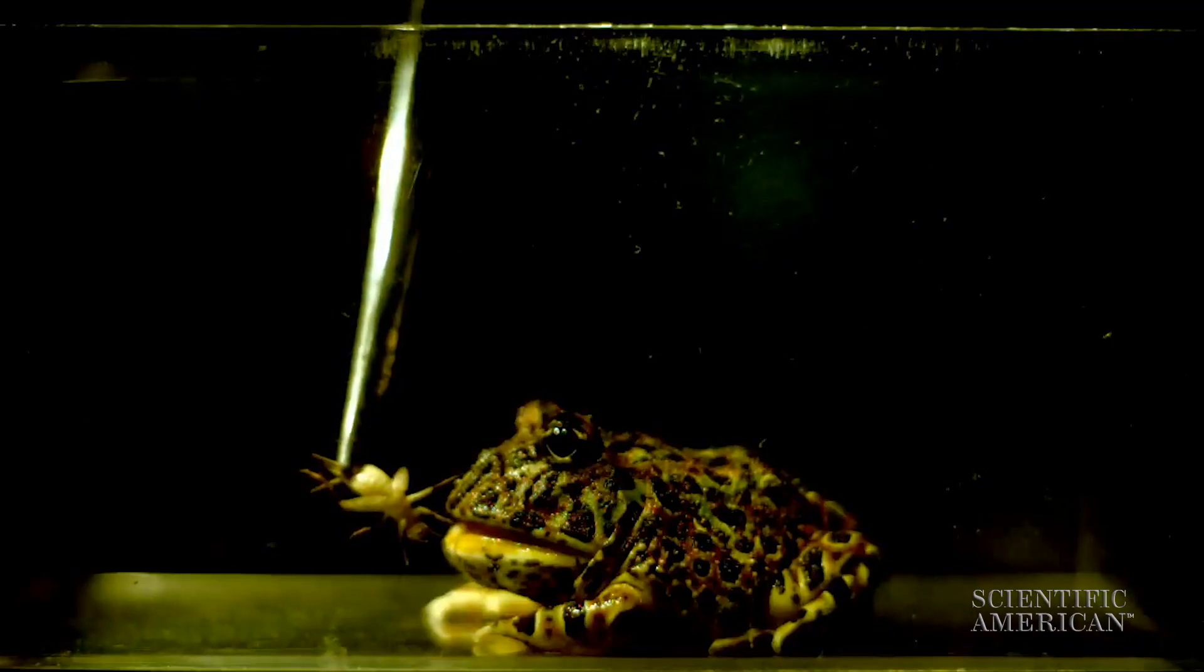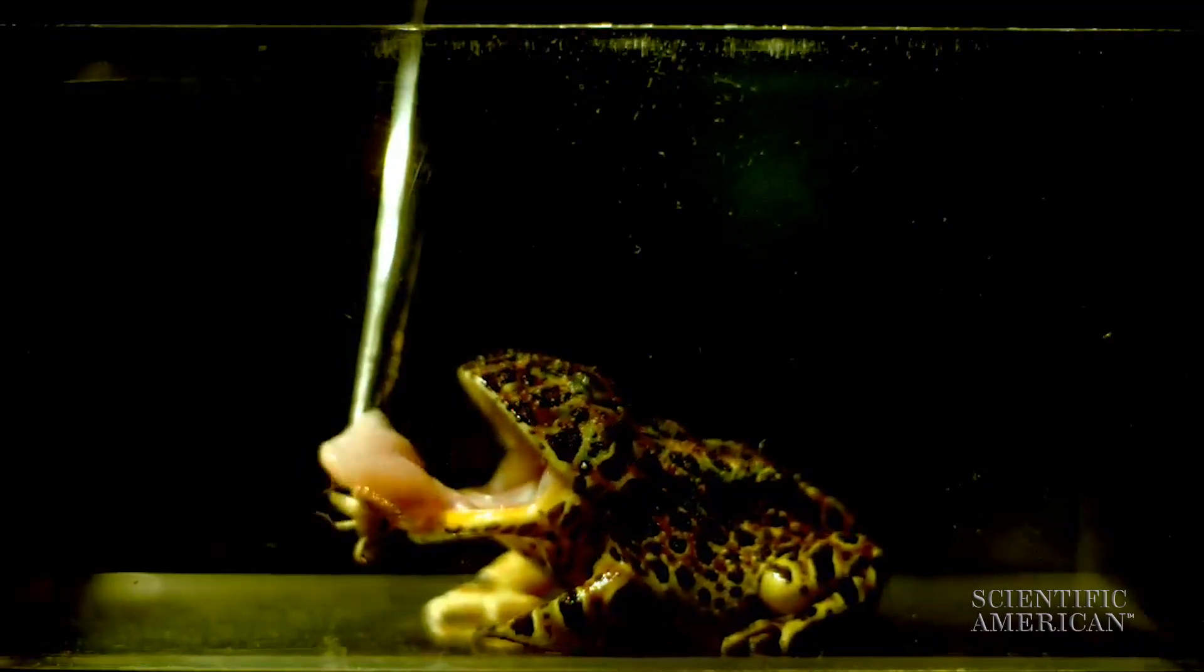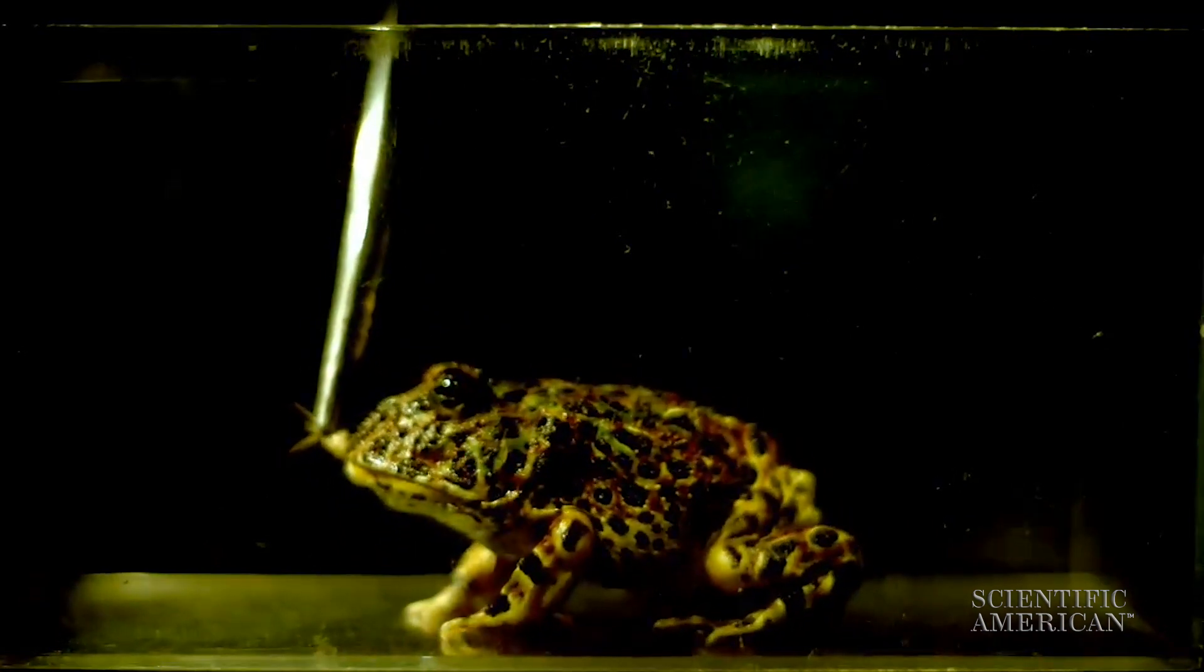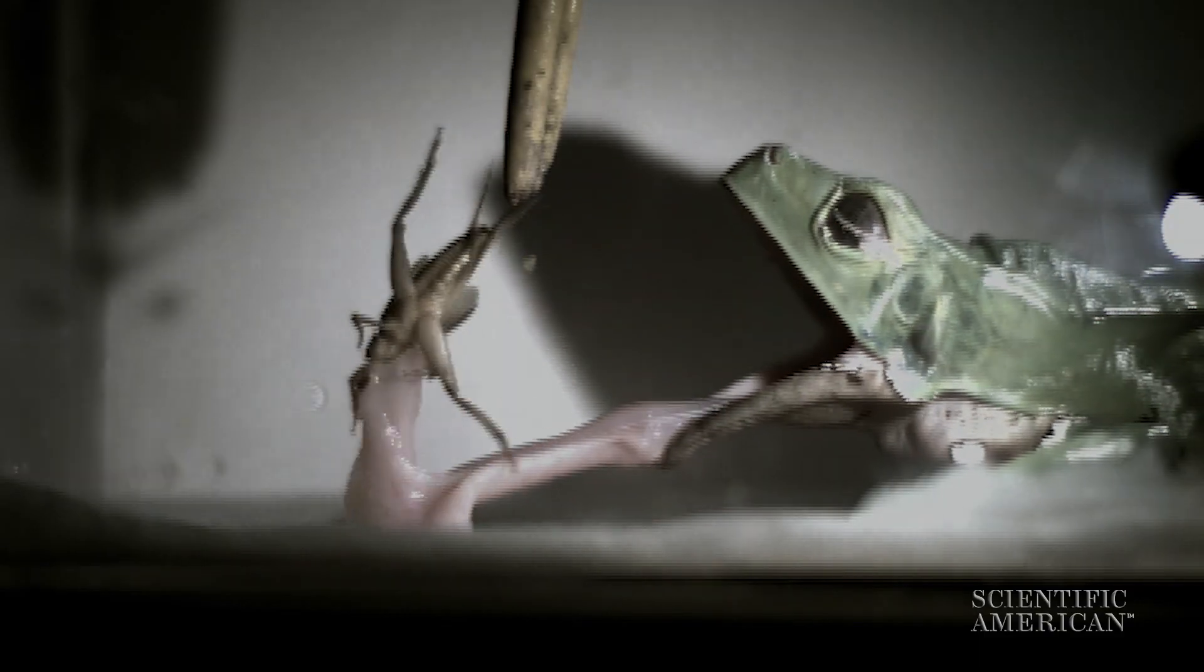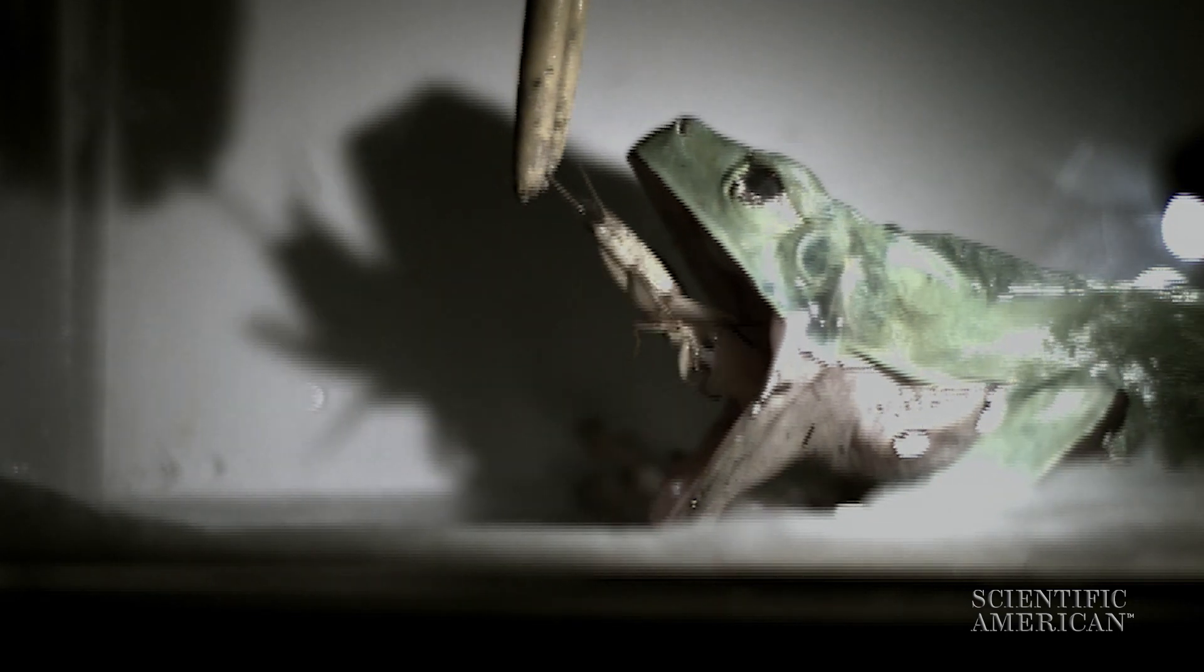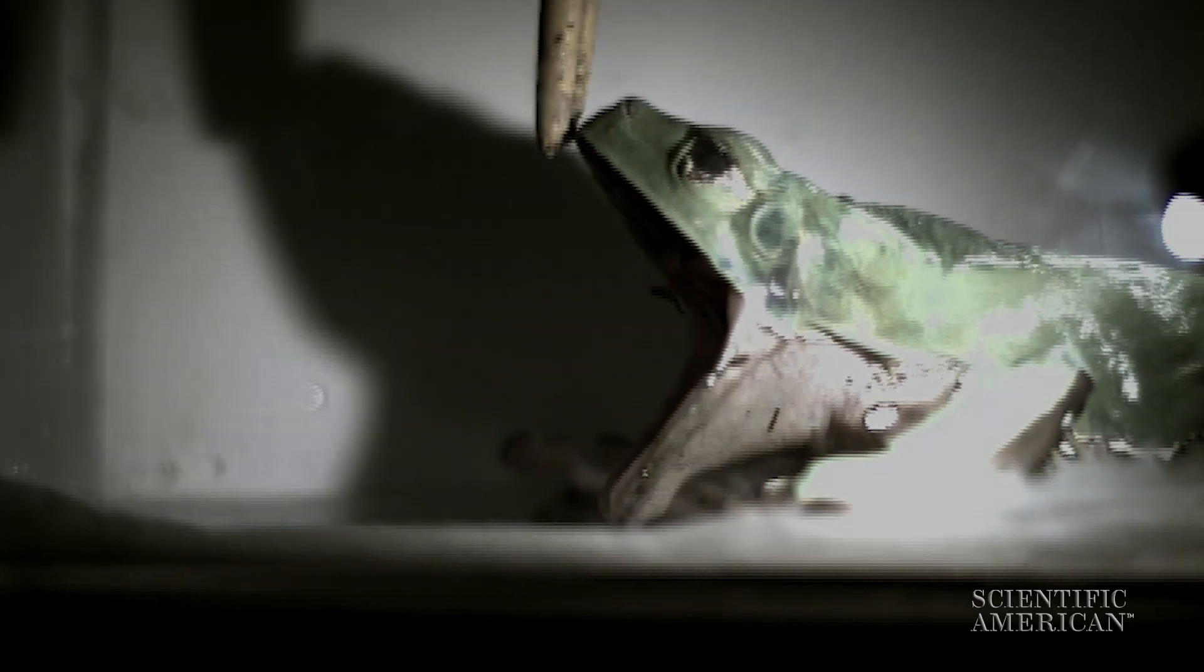That soft tongue comes in handy. Prey sinks deep into the tongue's surface, increasing contact for a good grip. The softness also absorbs force like a bungee cord, so the frog can reel in a cricket rather than giving it a yank that might cause separation.